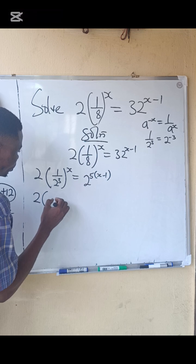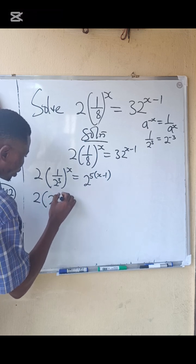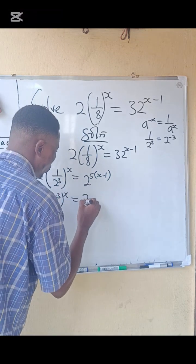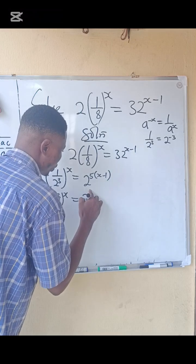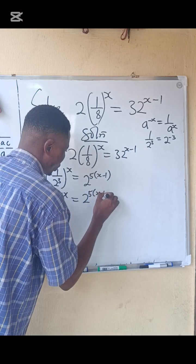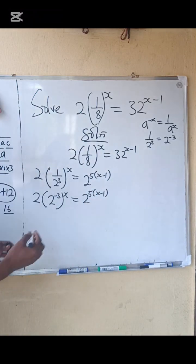So we have that 2 into 2 raised to power minus 3, raised to power of x equals to 2 raised to the power of 5 into x minus 1. So what next do we do?